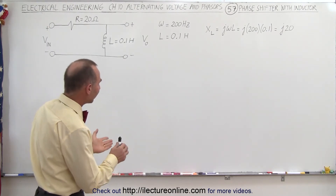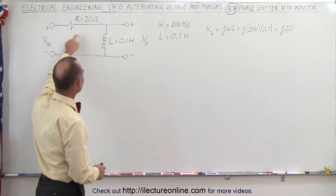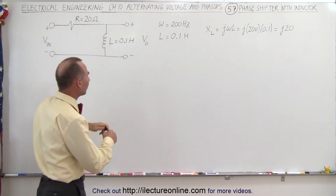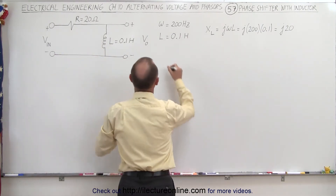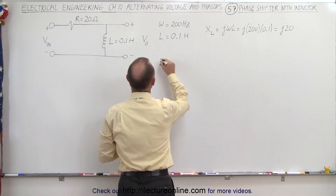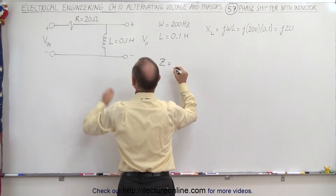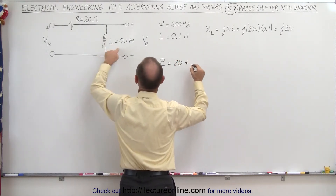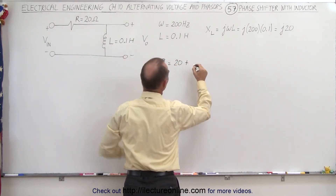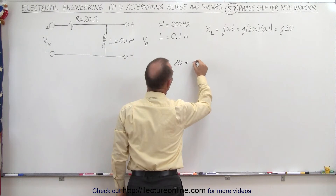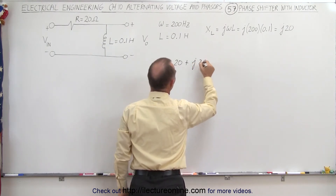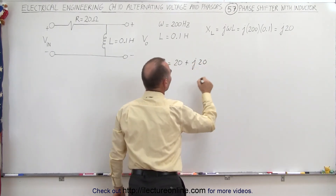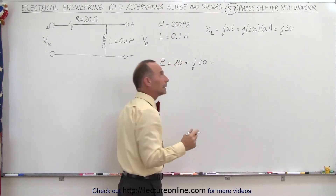So now the next thing to do is to find the impedance of the circuit. Of course they're in series, so the impedance is easy to find. Z is equal to the resistance plus the reactance of the inductor, which is J20, and you can see that they're the same magnitude.